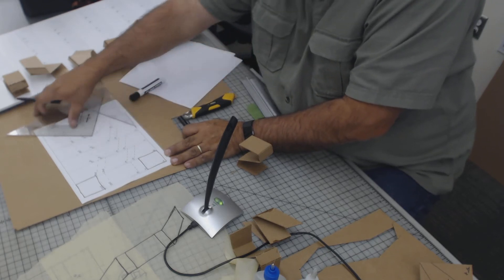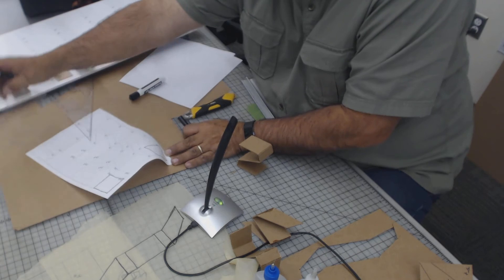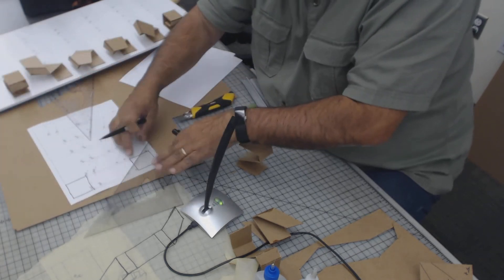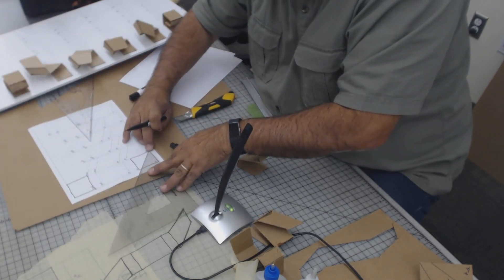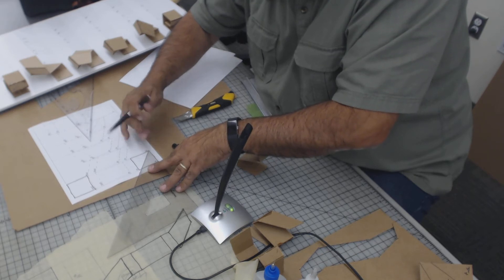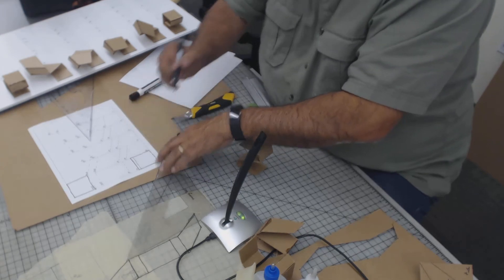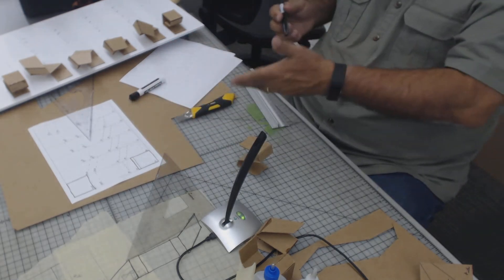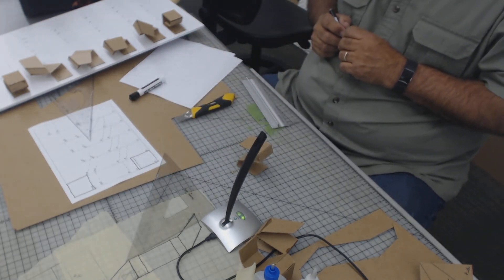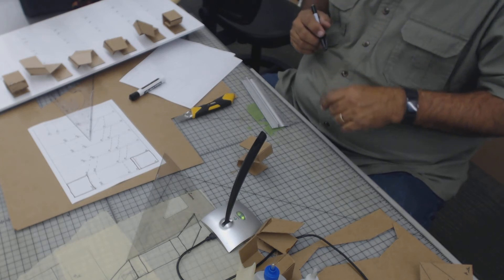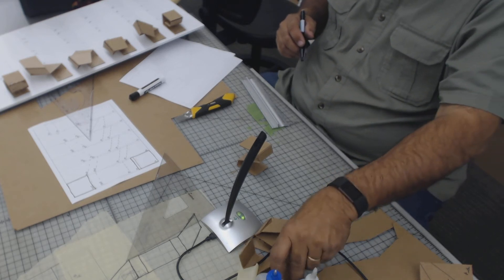We could verify that by just taking this 45-degree triangle and placing it here. Yeah, so it's not even one and a quarter to one. It's like maybe one and an eighth to one, okay?